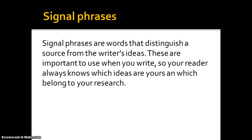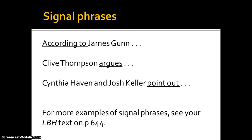Let's talk a little bit about signal phrases — these are one way to make sure your readers understand which ideas are yours versus which ideas are coming from your sources. Signal phrases let your reader always know which ideas belong to you and which ideas belong to your research. Some examples: 'according to' followed by the author's name, 'Clive Thompson argues,' 'Cynthia Haven and Josh Keller point out.' Your Little Brown Handbook has great examples on page 644.